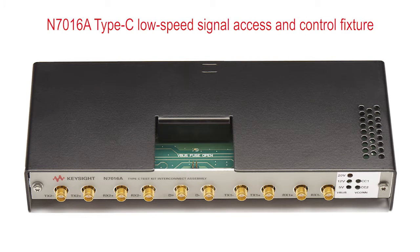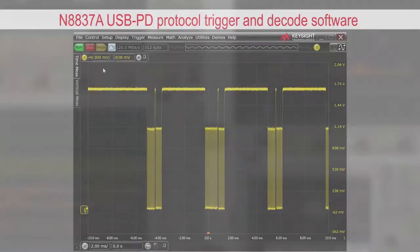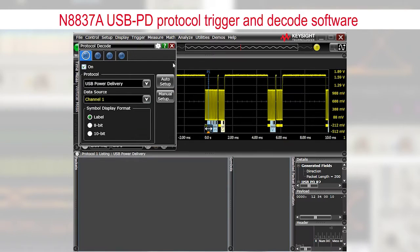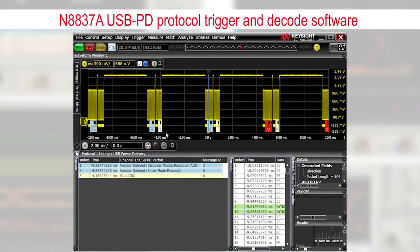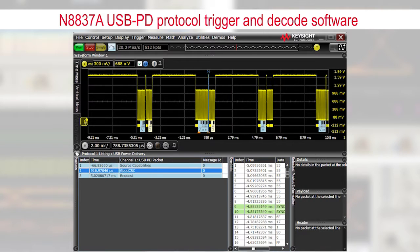The first part of testing USB PD is debugging. This fixture is specifically designed to help you debug and test the 300 kHz CC line and VBus lines for USB PD. We have also designed a specific power delivery probe to allow you to very accurately characterize your VBus signal. We have a new USB PD protocol trigger and decode software that allows you real-time triggering of the USB PD CC line.